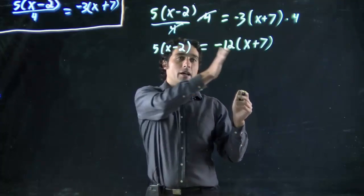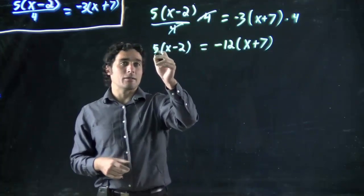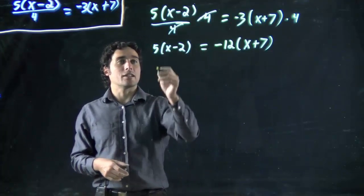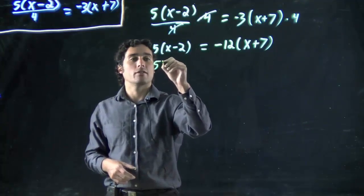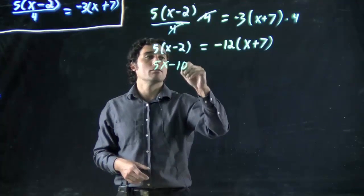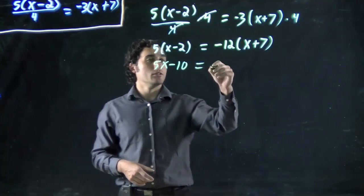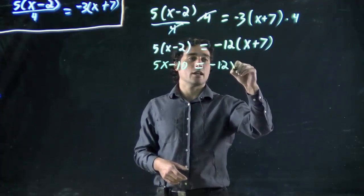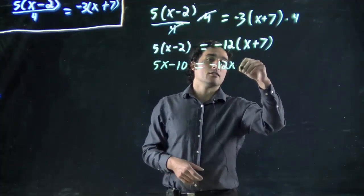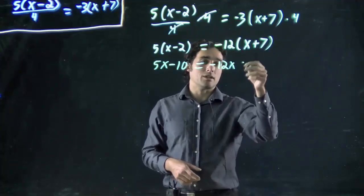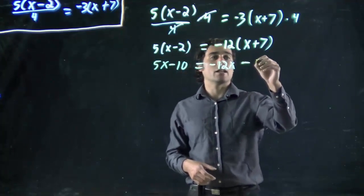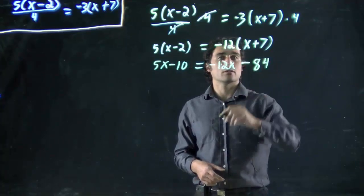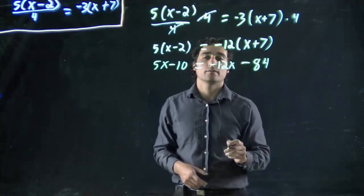So, now I'm going to multiply both sides. I'm going to multiply out this one and then multiply out this. Remember the 5 is multiplied by both the x and the 2. So, I get 5x minus 10. That's equal to minus 12x and then plus, well plus times minus is a minus. And then we should get minus 84. 7 times 12. Great.